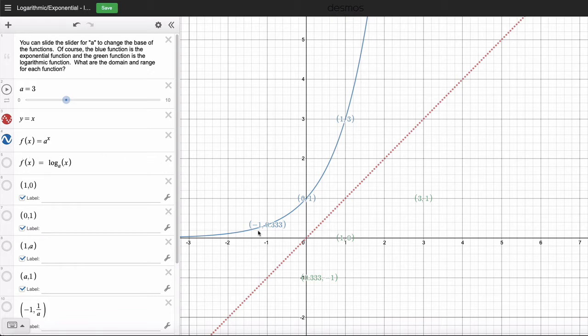Now, the inverse function to this is a reflection about this line. Imagine this is the mirror, and I have this curve. When I reflect it, it's going to look like this. And there's its reflection. That's the logarithmic function, log base three of x equals y.